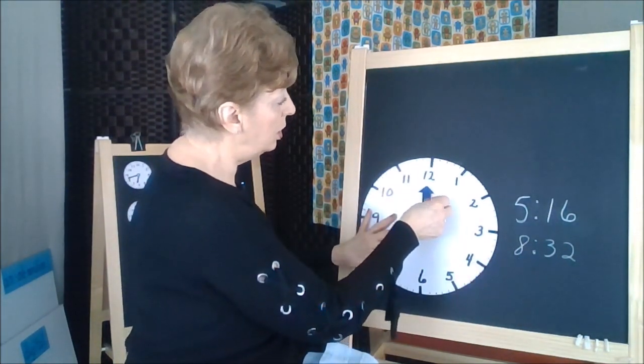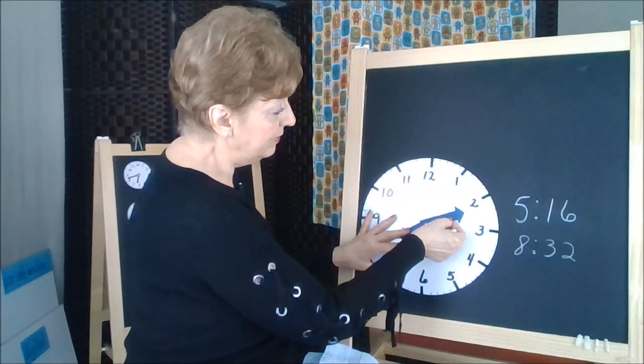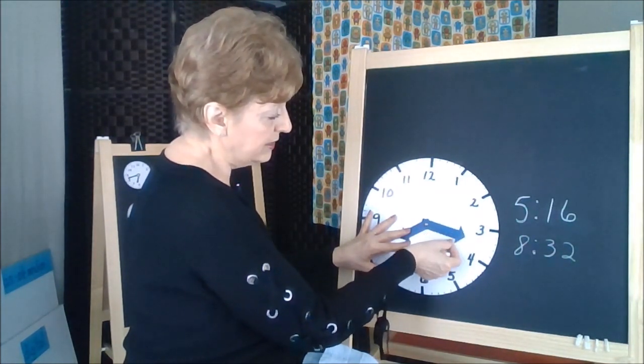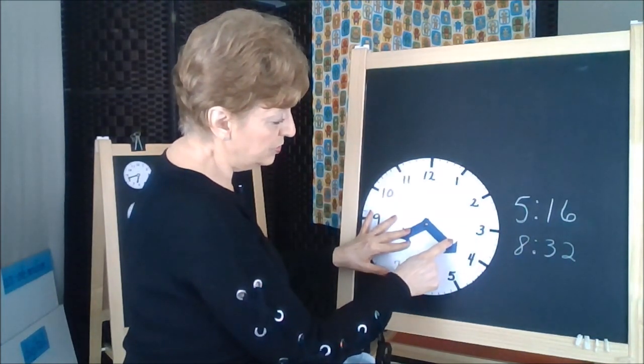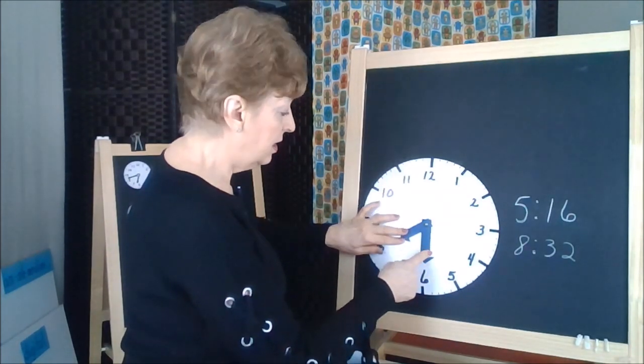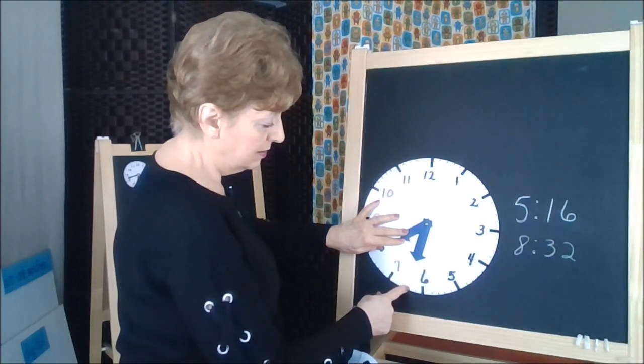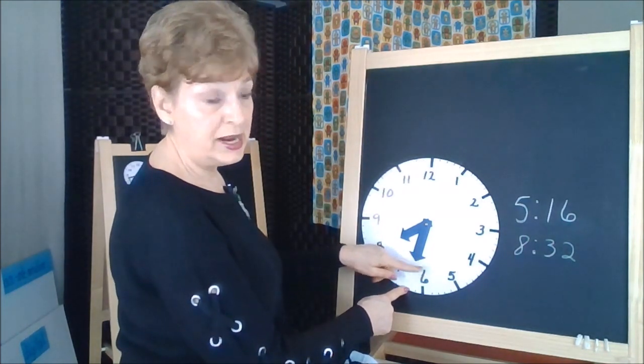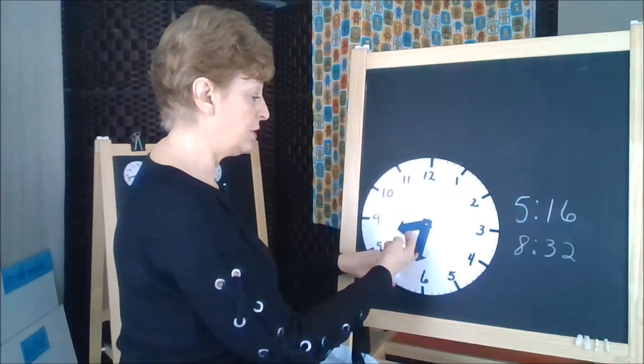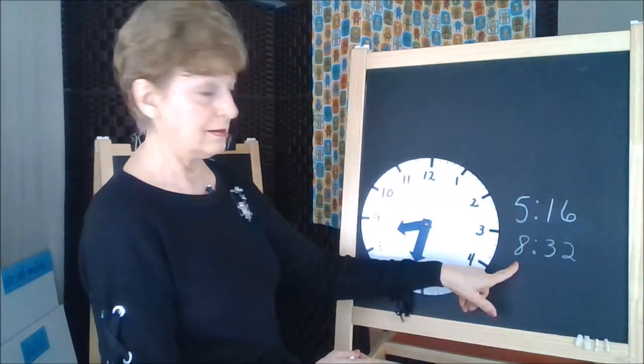Then we would have to go 1, 2, 3, 4, 5, 6, 7, 8, 9, 10, 11, 12, 13, 14, 15, 16, 17, 18, 19, 20, 21, 22, 23, 24, 25, 26, 27, 28, 29, 30, 31, 32. See how it's pointing right here to this one? Now the large hand went over the 6, over the halfway mark, so that means we have to move our small hand halfway between the 8 and the 9. So this would be 8:32.